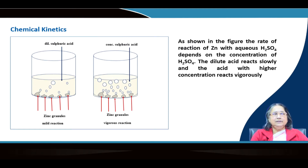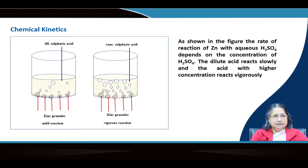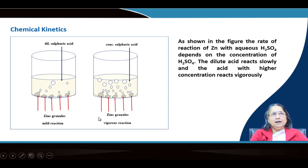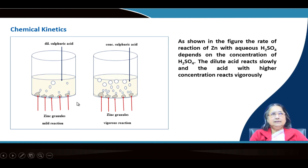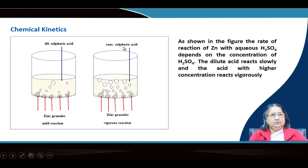What is a chemical reaction? We all know, say for example, A and B react to give C and D. Then A and B are called the reactants and C and D are called the products. Here you can see some reaction is going on — there are two vessels. In both vessels zinc granules are there; in the first vessel dilute sulphuric acid is added and in the second vessel concentrated sulphuric acid is added.